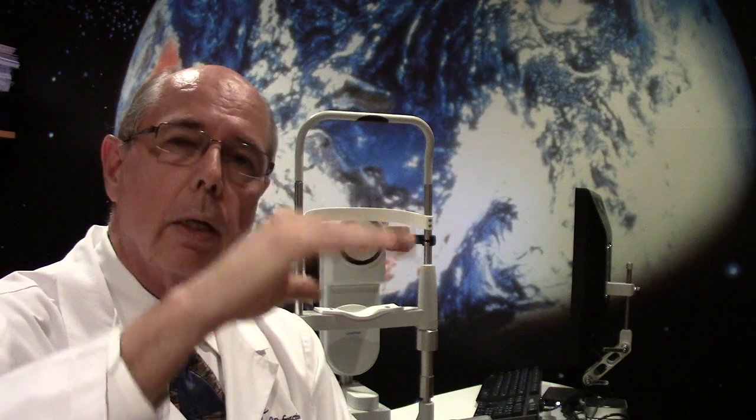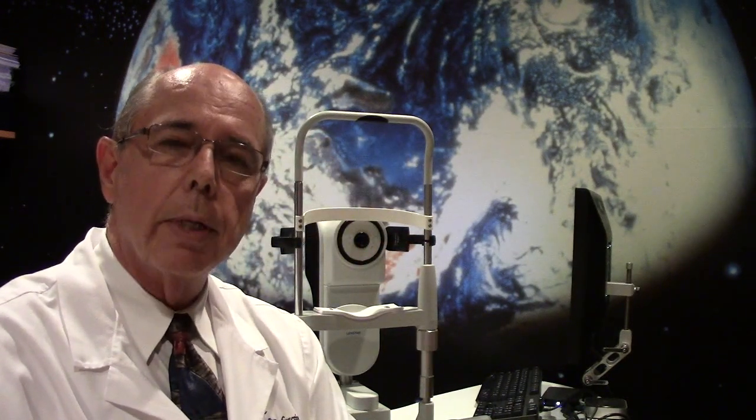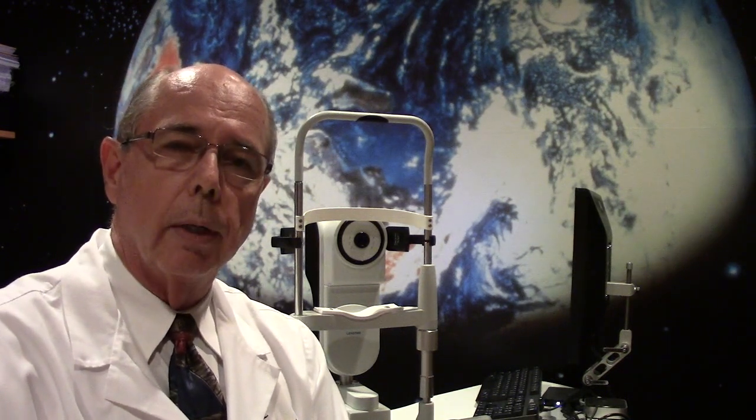So your tear film is composed of three basic layers: a bottom mucous layer, then a water layer, and then an oily layer. The oily layer covers over the water layer and protects it from evaporating from the surface of your eye, and oil is also a lubricant.